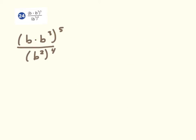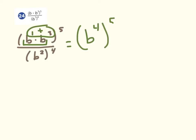Number 24 looks similar to the last one, except there's an invisible exponent on the b, so I'm going to slide that in — that's b to the first power. We'll begin in the numerator: the bases are the same and we're multiplying, so we can use the product rule — keep the base and add the exponents. So in the parentheses we have b to the 4th, raised to the 5th power.